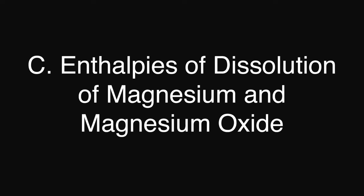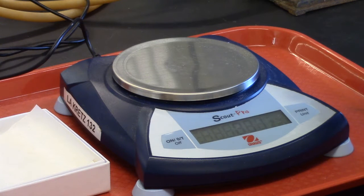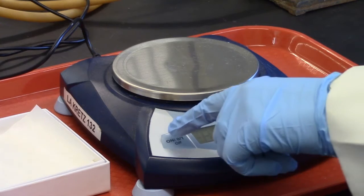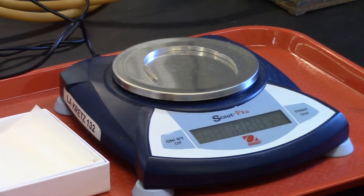Part C, enthalpies of dissolution of magnesium solid and magnesium oxide. First, weigh the magnesium strip, but make sure the balance is set at zero. Record the mass of the magnesium in the notebook.